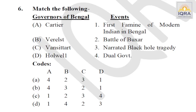Very important: the famous governors of Bengal and important events. Cartier — first famine of modern India in Bengal took place during this period. Vansittart was the governor during the Battle of Buxar. Vansittart was during dual government. Holwell narrates the story of the Black Hole tragedy. Answer is D.